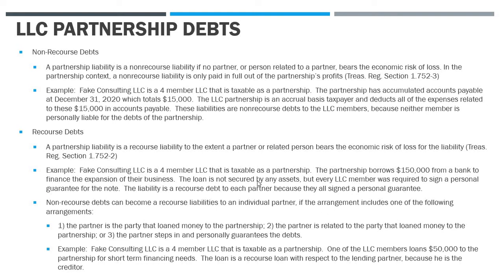For example, if the LLC opens a credit card in its name and EIN, but in order to get it, the credit card company needed somebody's personal credit information, social security number, and a guarantee from a partner — then in that context, that would be recourse debt to that partner because they had to step in and sign a guarantee for that credit card account for the LLC.